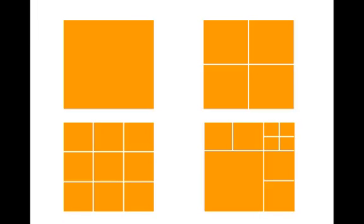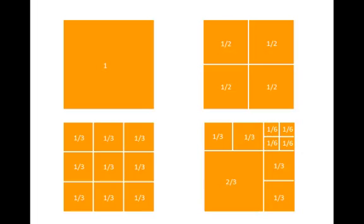But when it came to two dimensions that didn't work. Let's take a look at a couple of different ways to build a big square out of similar copies of a square. If I take the scaling factor one-half and add it four times, I'd get 2, not 1. Or if I took one-third added nine times, I'd get 3, not 1.